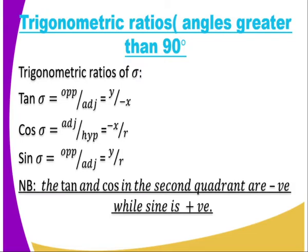We go to the second quadrant where we have mu. Tan alpha is opposite over adjacent, which is y over negative x. Cos mu is adjacent over hypotenuse, which is negative x over r. And sin mu is opposite over hypotenuse, which is y divided by r. Note that tan and cos in the second quadrant are negative, while sin is positive. These are angles greater than 90 but less than 180 degrees.